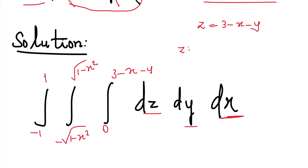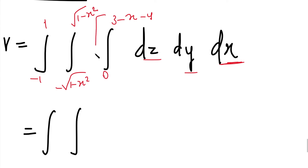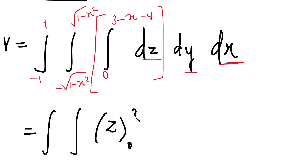Now that we have all the limits, we can find the volume. Therefore, volume equals the triple integral of dz dy dx, substituting all x, y, z limit values. This equals a double integral — first simplify the inner integration with respect to z. At this inner integral, z is the only variable, and the integral of dz is simply z.